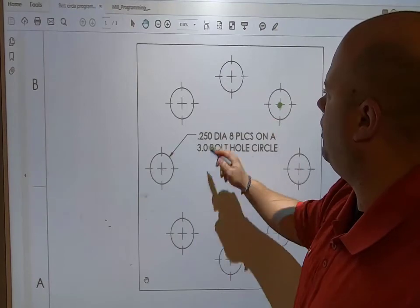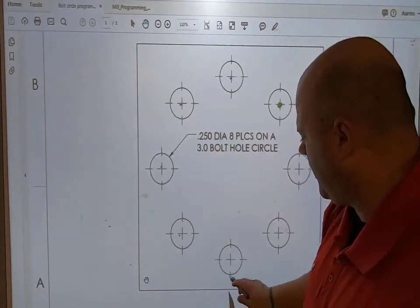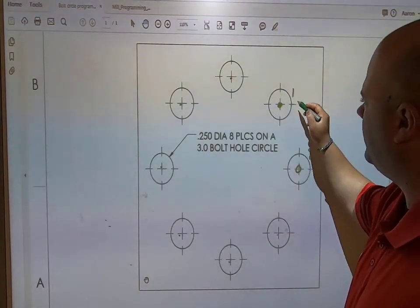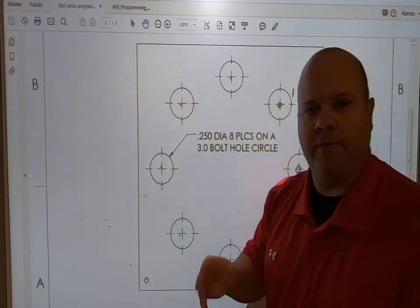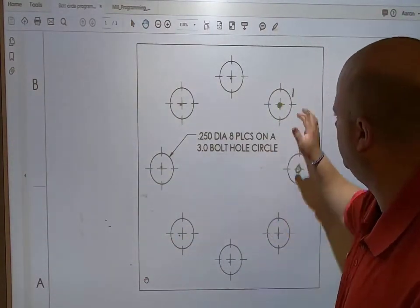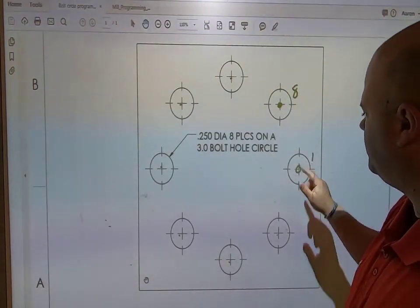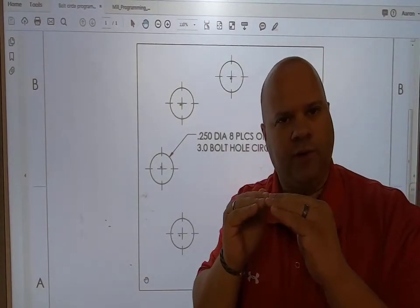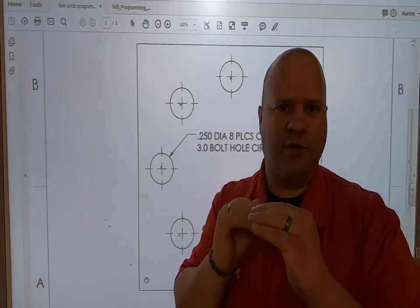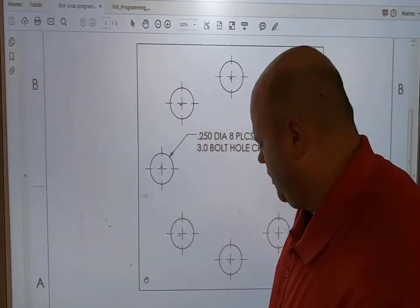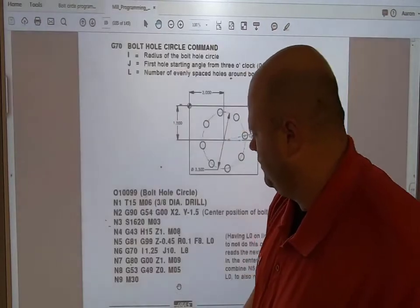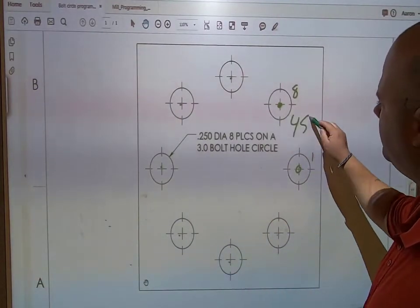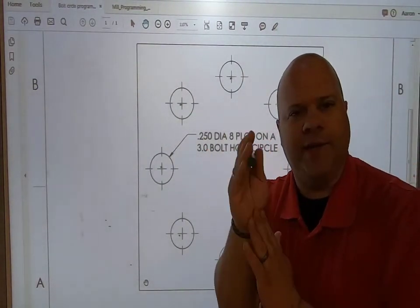This would be my eighth hole, that would be my first hole. That's very imperative because if I was to call this one my first one, my machine would alarm out because it cannot compute zero degree angle evenly spaced eight times. So make sure whenever you're putting in that J variable, you're putting in 45 degrees or whatever that first angle is that you need.